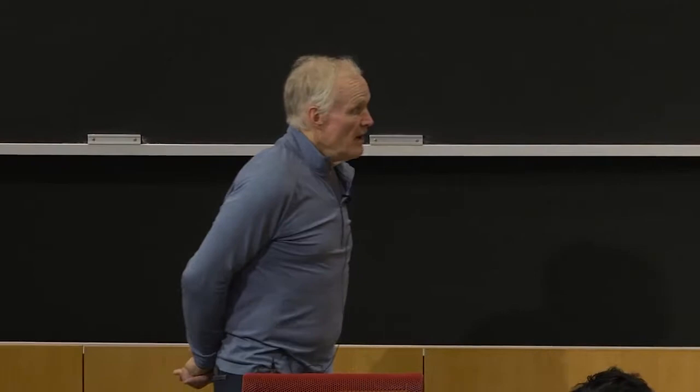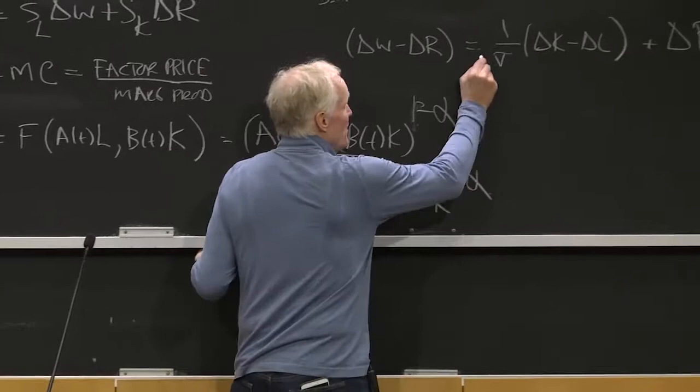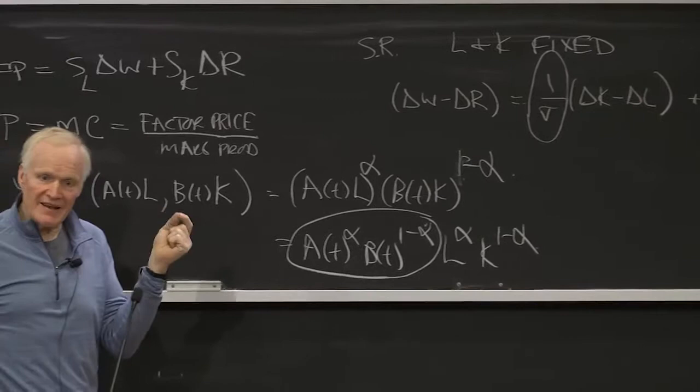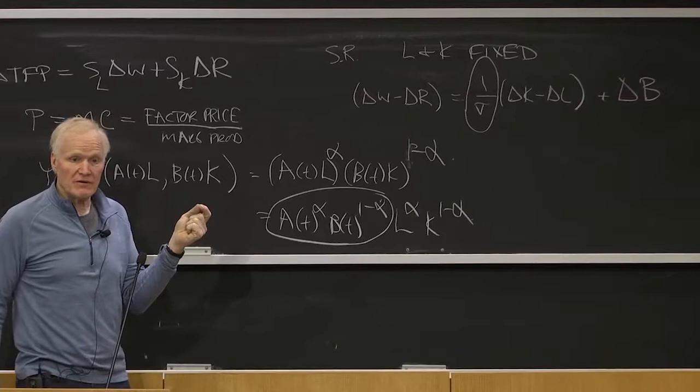For measuring technological bias, it's a little trickier because you have to estimate this parameter sigma. If you don't know what sigma is, you can't get a direct estimate of the level of technological bias.